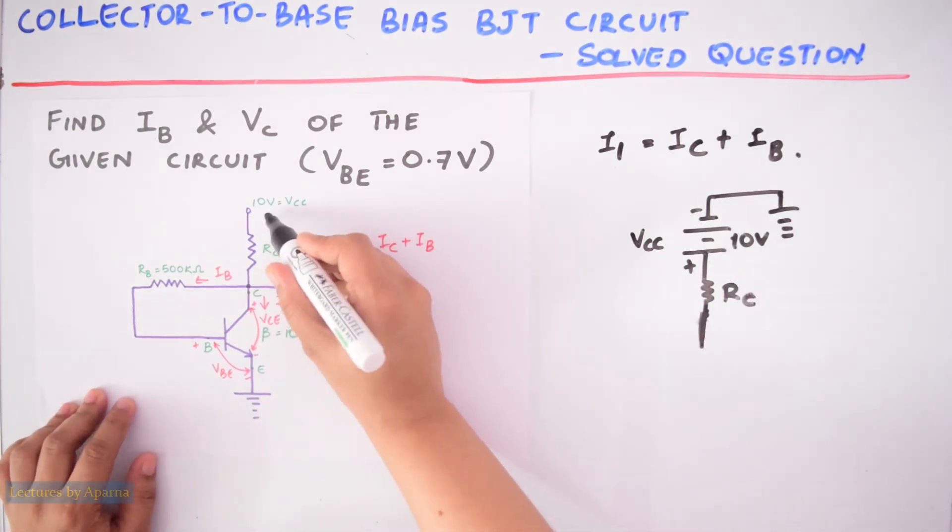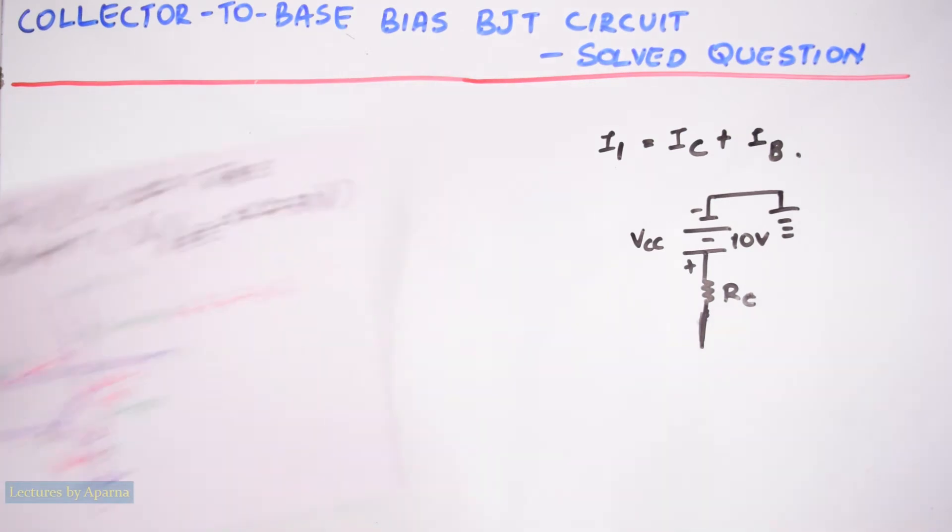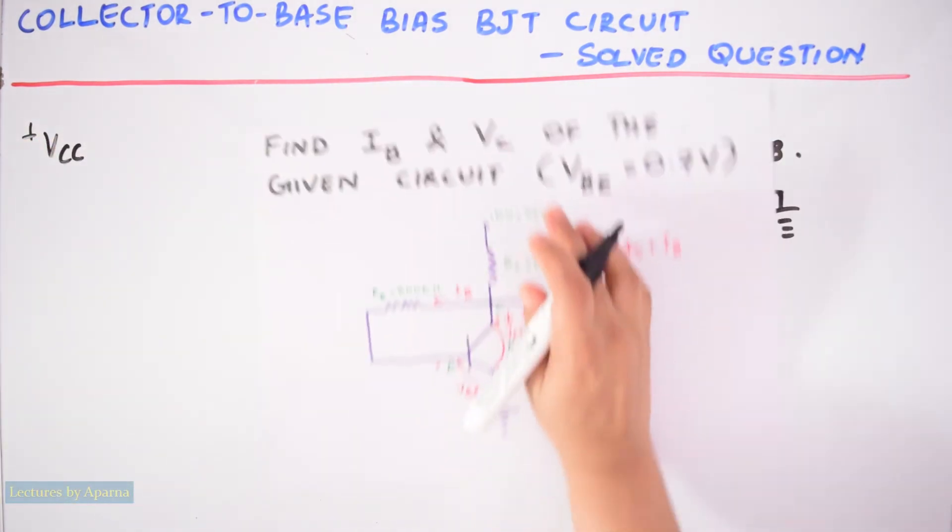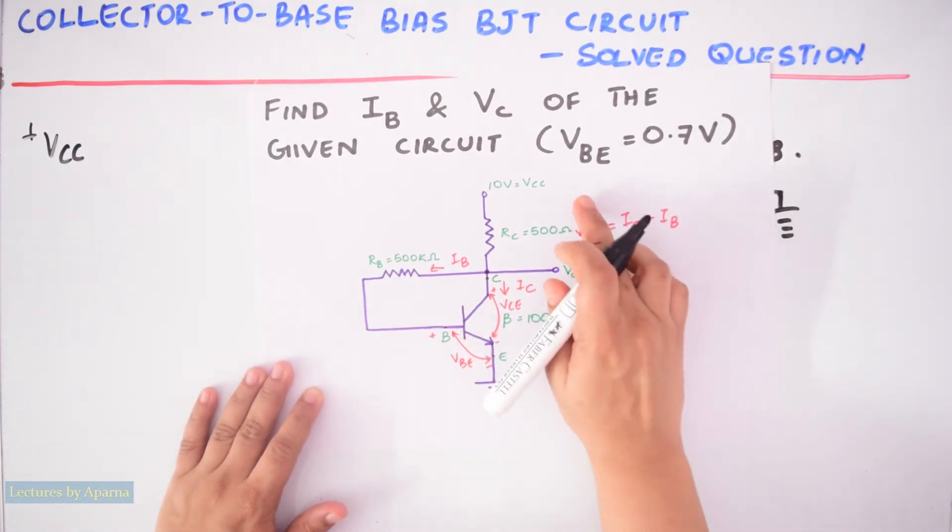First we have to start from VCC. So here, since it is an increase in potential, we can write it as plus VCC. And when I consider here, this RC current is flowing from a higher potential to lower potential, so it is a decrease in potential.